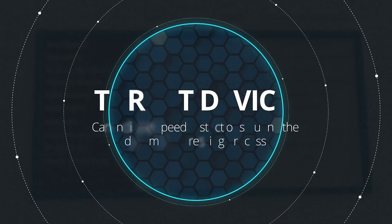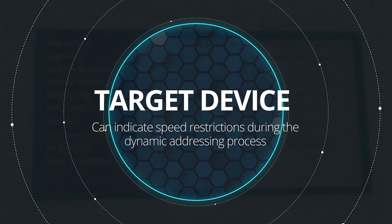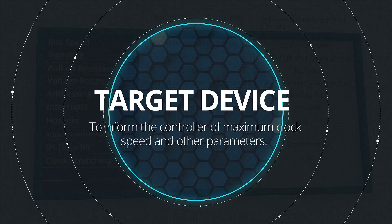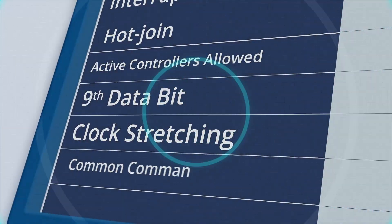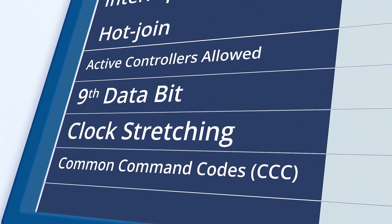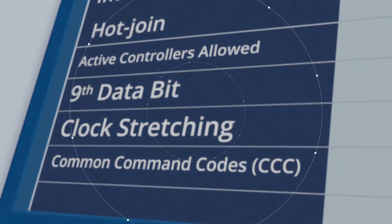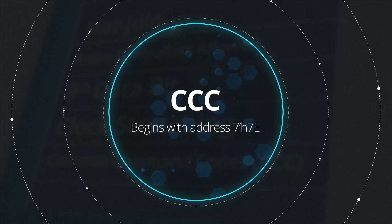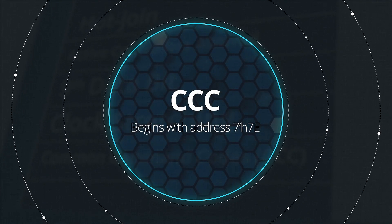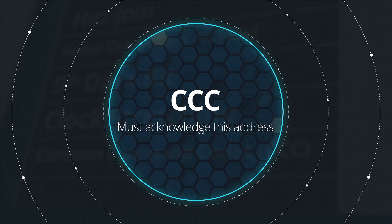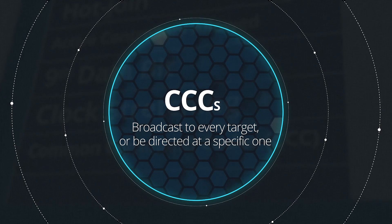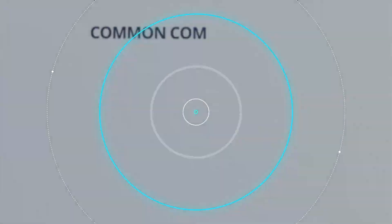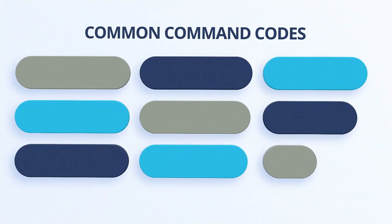However, the target device can indicate speed restrictions during the dynamic addressing process to inform the controller of maximum clock speed and other parameters. Common Command Codes, or CCCs, are significant new features in i3C. Every CCC begins with address 7H7E, and all i3C devices must acknowledge this address. CCCs can be broadcast to every target or be directed at a specific one. There are too many CCCs to cover in this video, but here are some of the important ones.